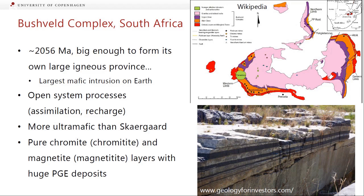In the top right there's a map of the intrusion — even though it's massive, we only see it exposed in certain areas. On the bottom right, the black stripes in this rock are chromitites: very thin but very continuous layers. Some of these layers you can follow the whole way across the intrusion — a few centimeters thick but 400 kilometers long, which is kind of crazy.